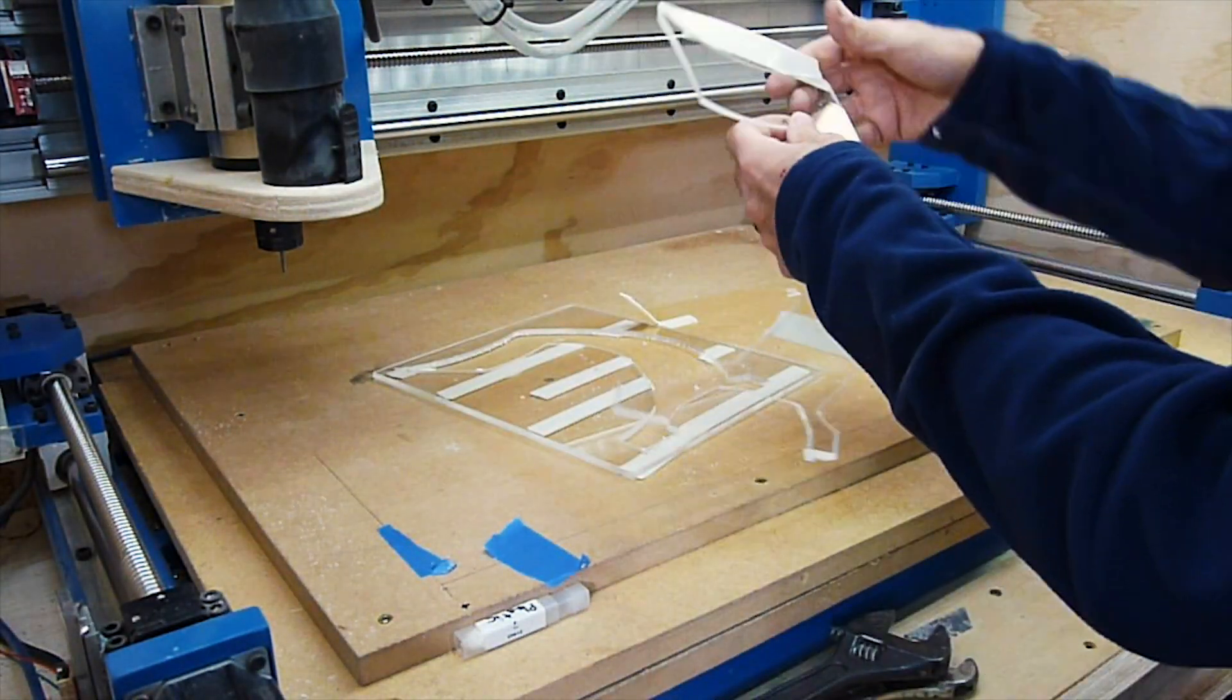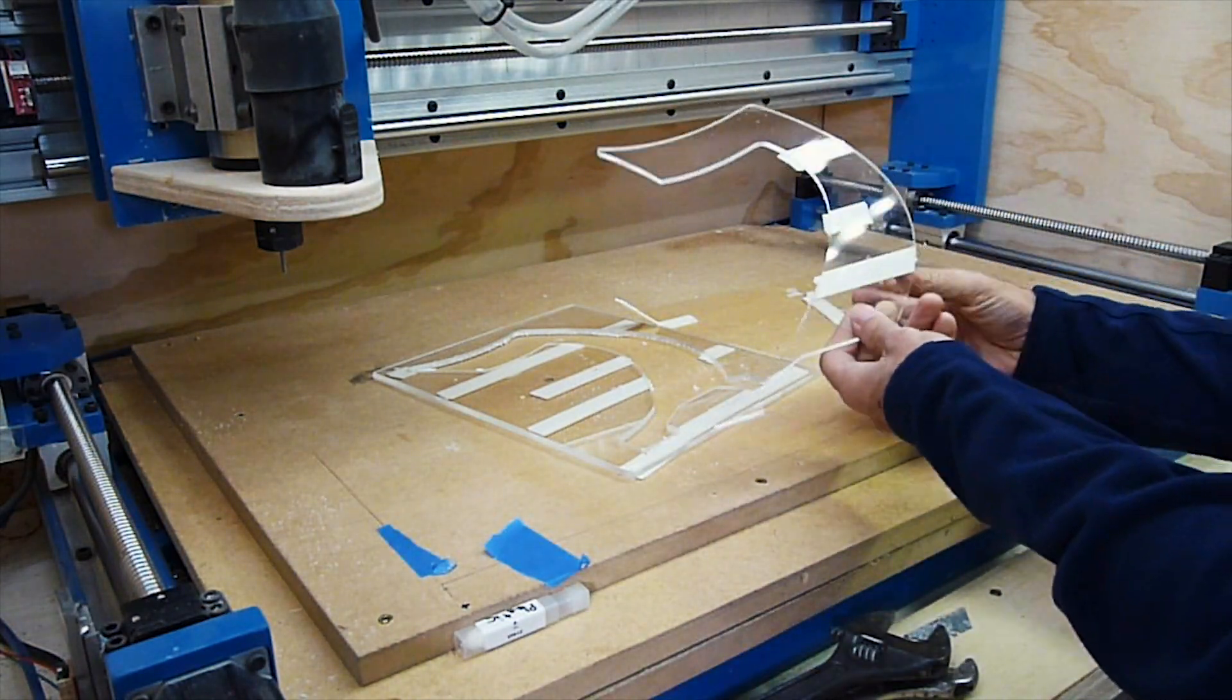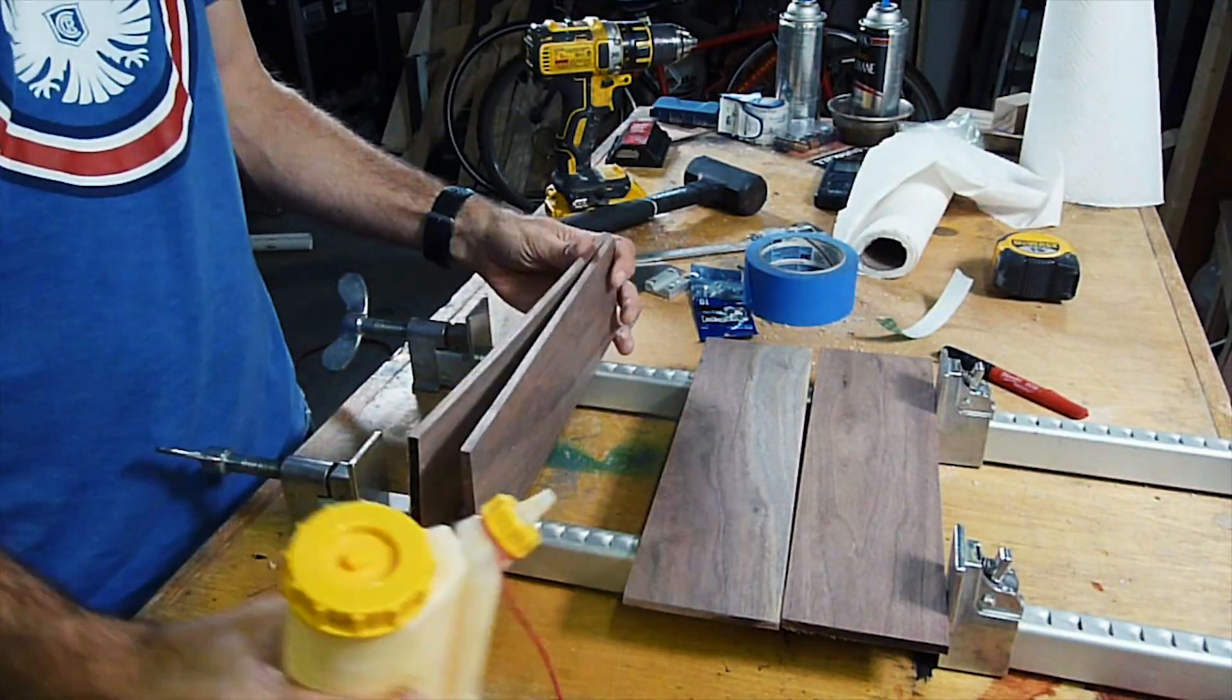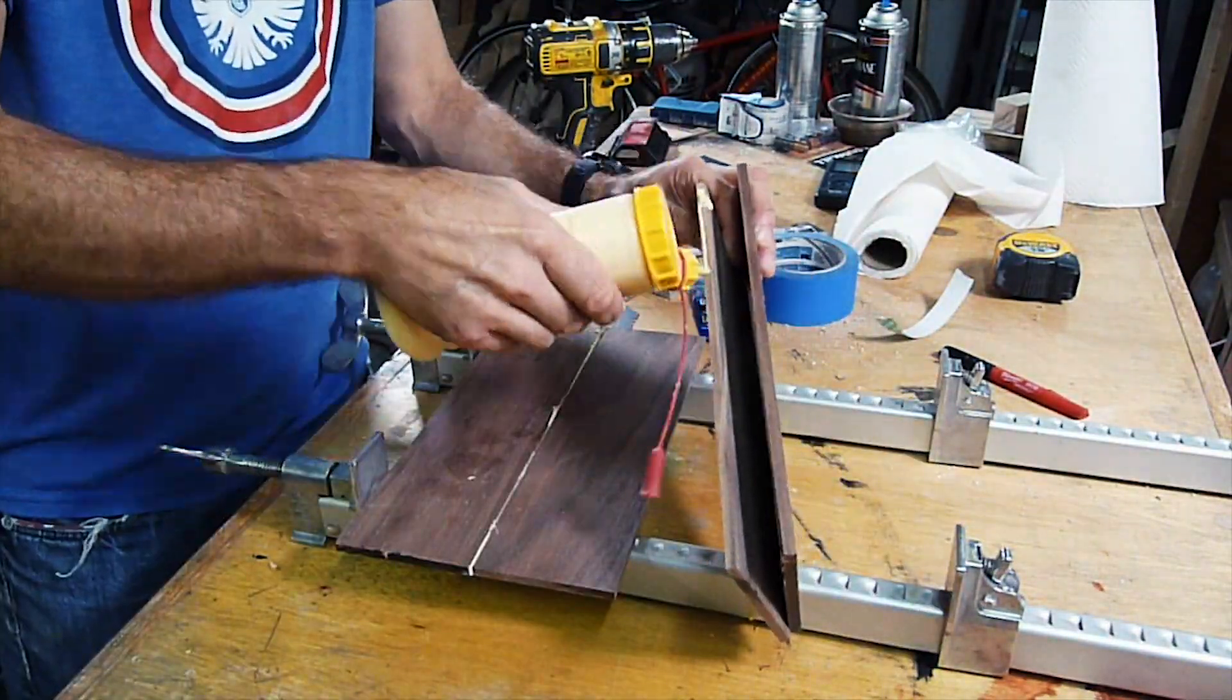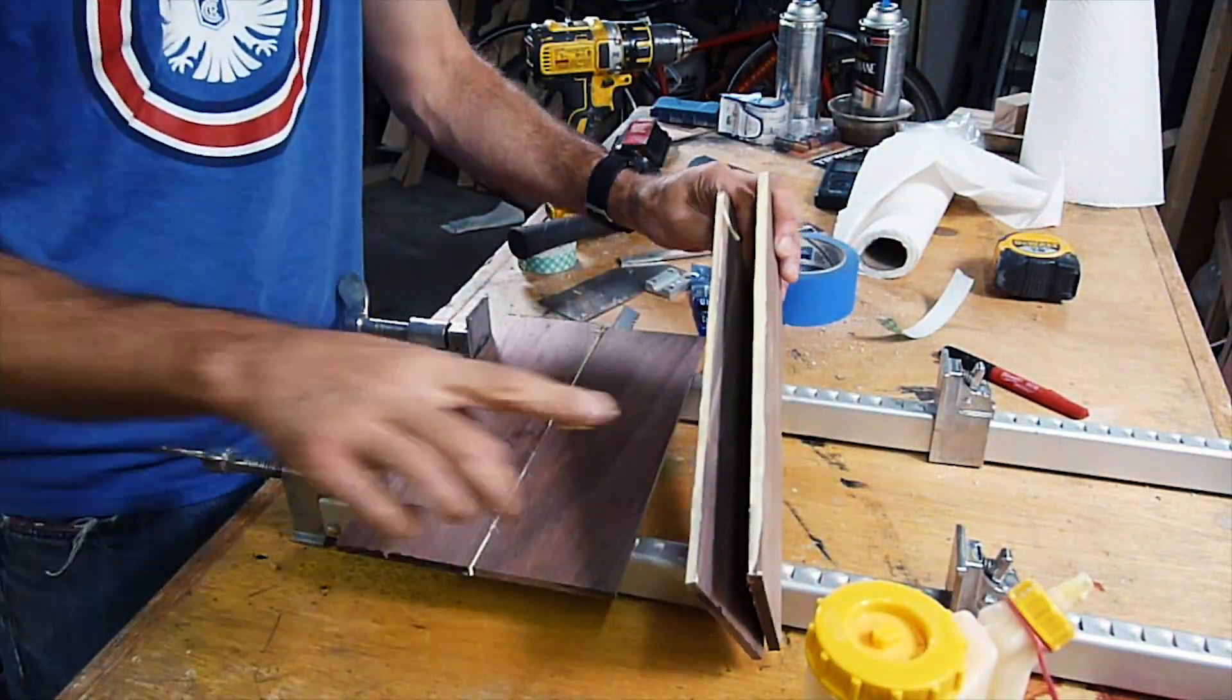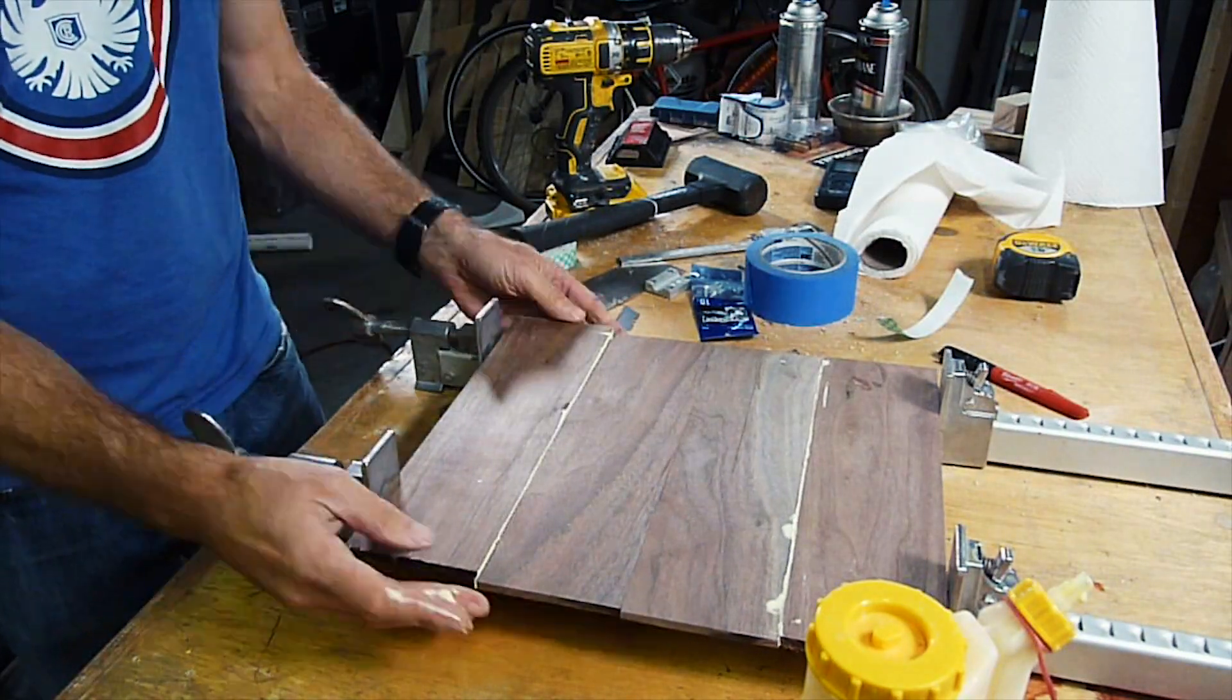And this is a home-built CNC machine that so far is working pretty well. And we're going to glue two walnut pieces on either side of that plexiglass.